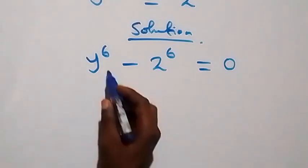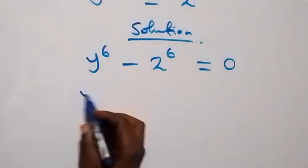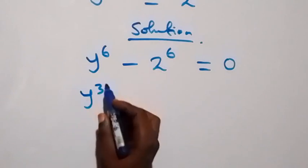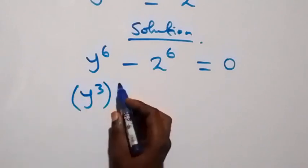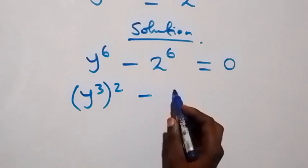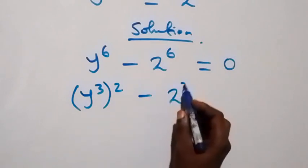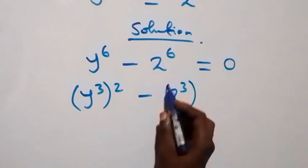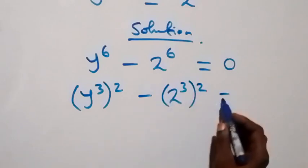From here we can separate 6 as 3 times 2, so that we have y raised to power 3 then raised to power 2, minus 2 raised to power 3 then raised to power 2.